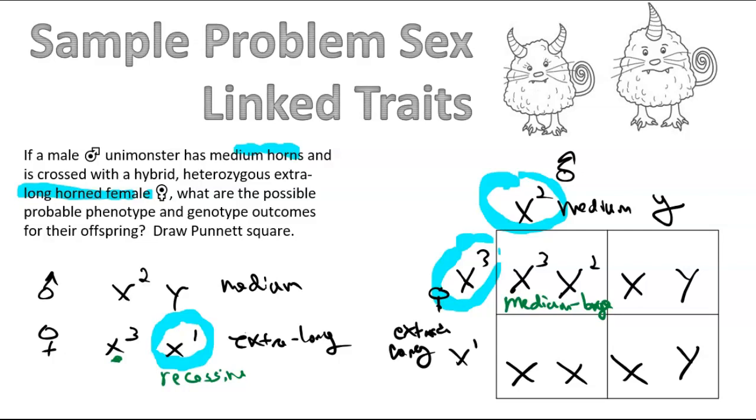Next one down, mom has a 1 for short, and dad provides a 2 for medium. So that would be recessive, so it would be a medium.